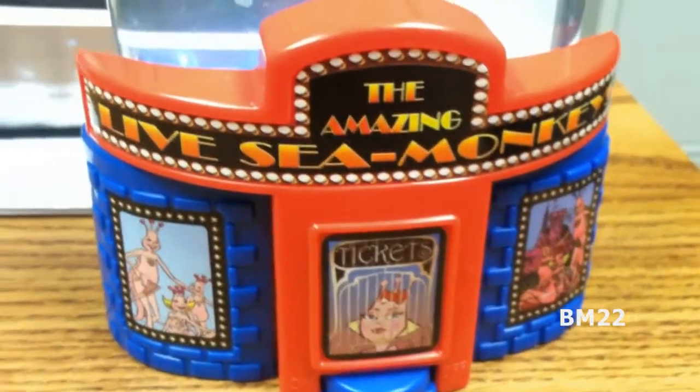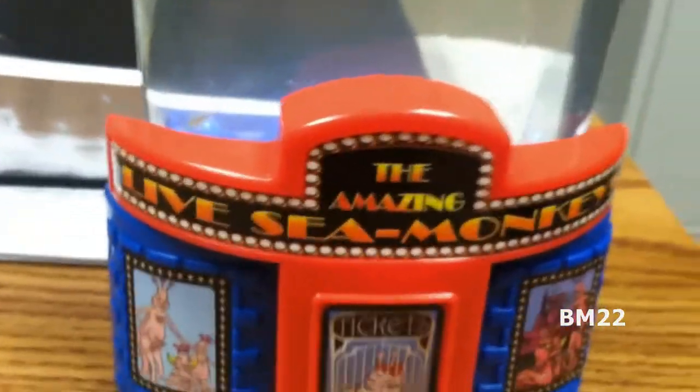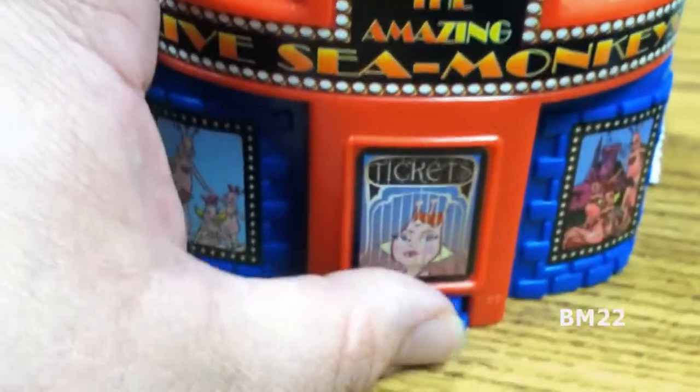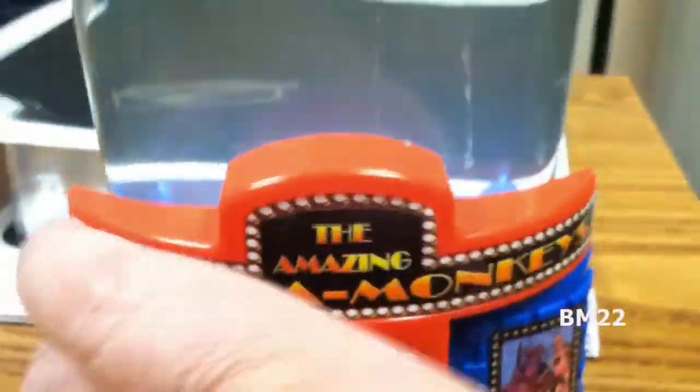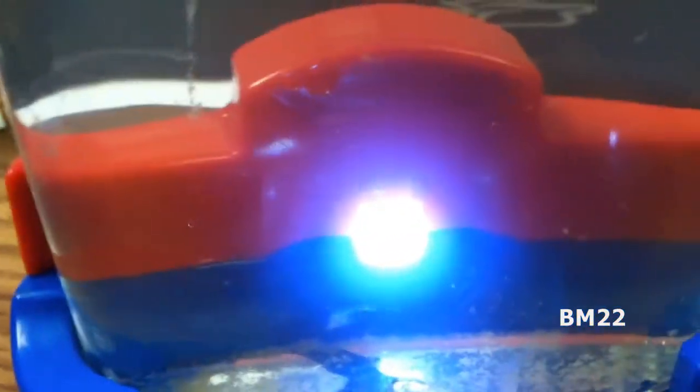At the bottom there where it says tickets, there's a little thing you can click. When you click it on, it turns on a little LED light that's in the back there. Harold's kind of attracted to the light. You can see him kind of swimming in it.